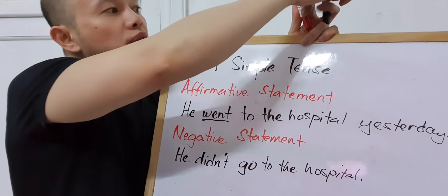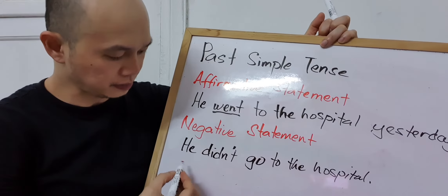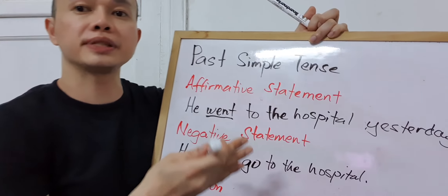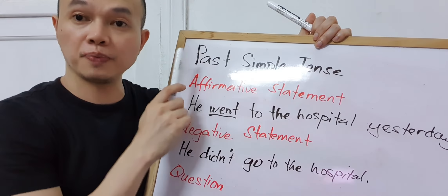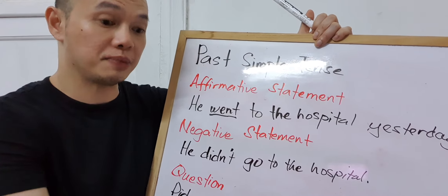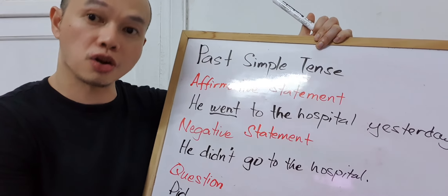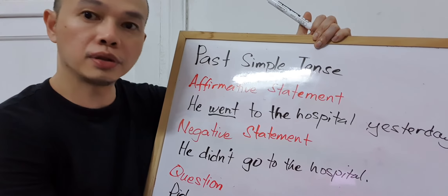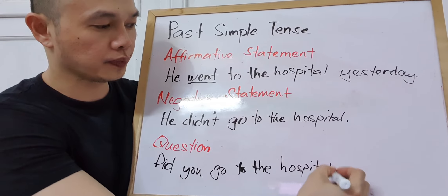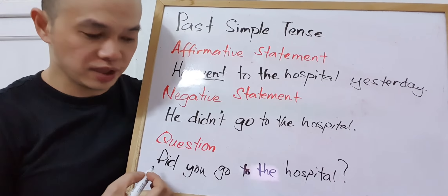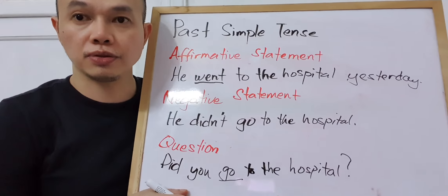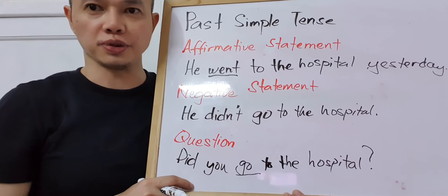Same rule applies to the question form. In Present Simple Tense you use 'do' or 'does,' but in Past Simple Tense you use 'did.' The same rule applies — the main verb must be in the base form. So you say 'Did you go to the hospital?' Use 'did' and then the main verb must be in the base form.